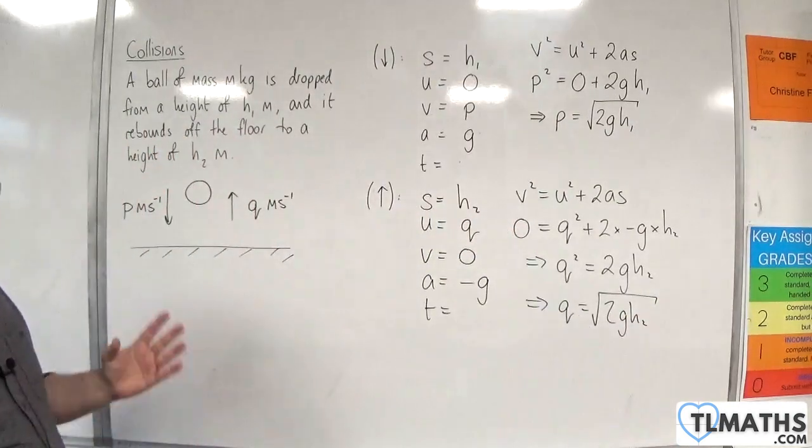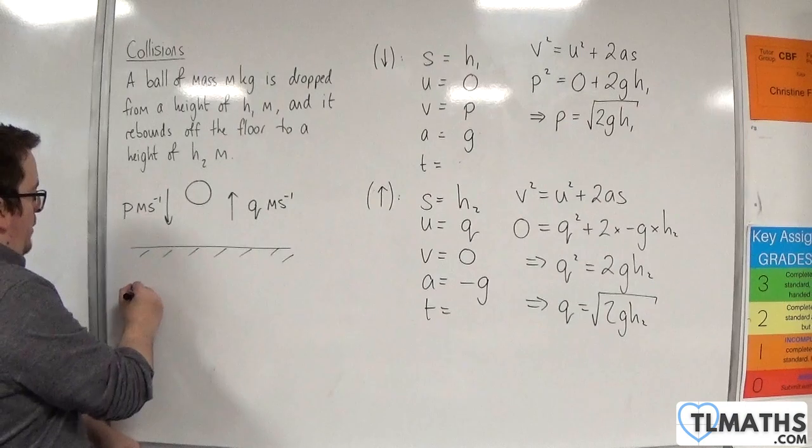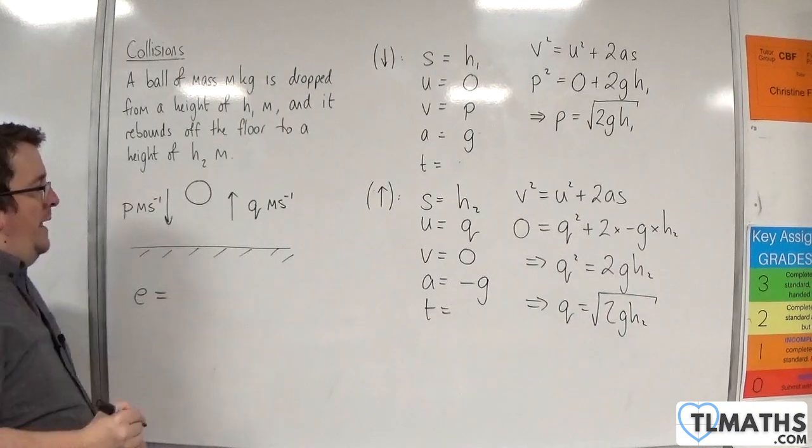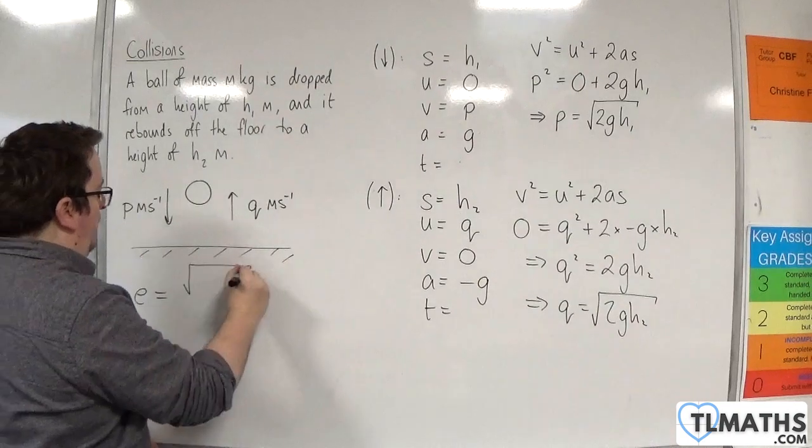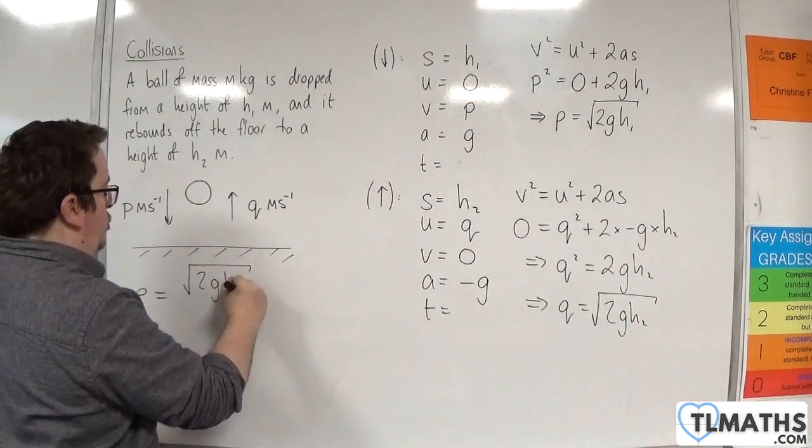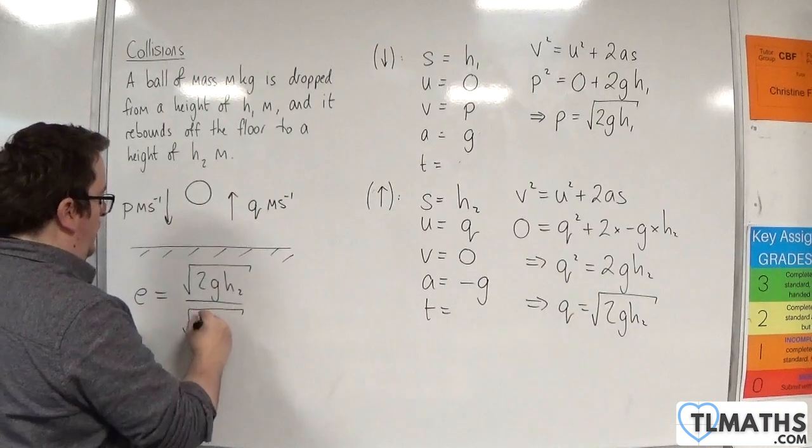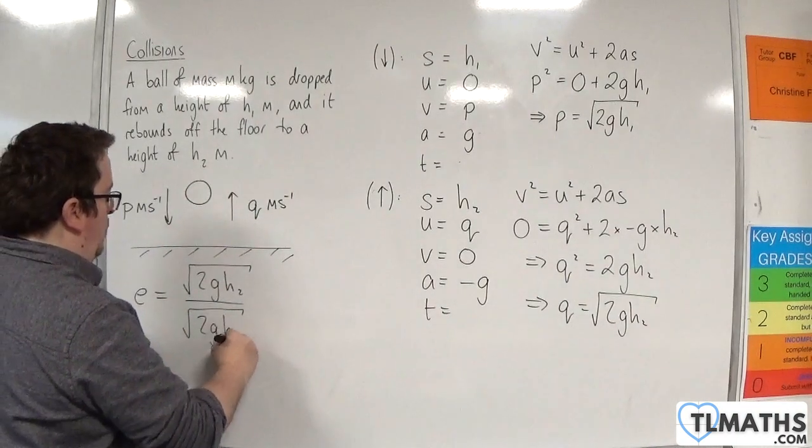So we now have p and q. Now the coefficient of restitution is the speed of separation, so q, which is the square root of 2gh2, divided by the speed of approach, 2gh1.